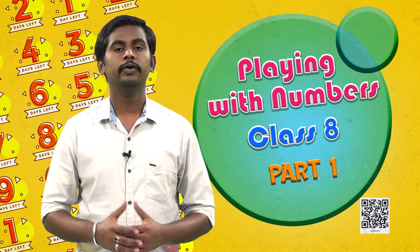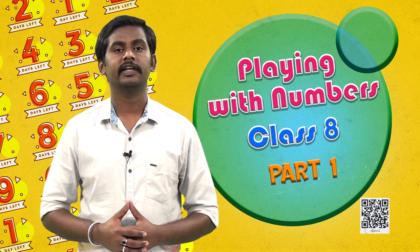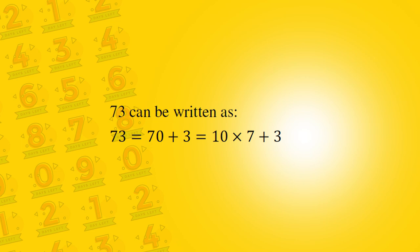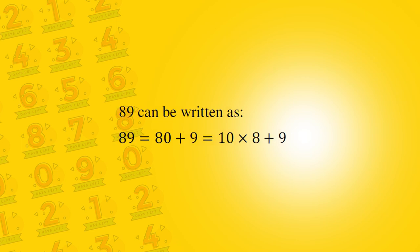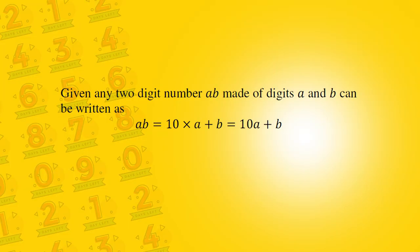Students, before we begin to play with them, let us try to understand a very interesting fact about numbers. Look at the number 73. 73 is equal to 70 plus 3, that is equal to 10 times 7 plus 3. Similarly, 89 can be written as 80 plus 9, that is equal to 10 times 8 plus 9. Similarly, given any two-digit number AB made of digits A and B can be written as AB is equal to 10 times A plus B.